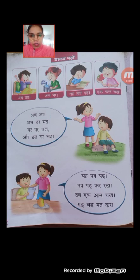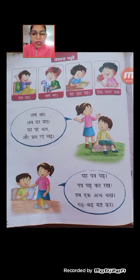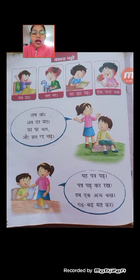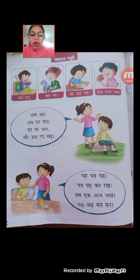आज हम पढ़ेंगे — वाक्य पढ़ो। दो अक्षरों वाले शब्द हमने पढ़ लिये हैं, अब उन्हें वाक्य में कैसे रीड करेंगे वो जानेंगे। जैसे पहला है — जो picture दे रखी है उसमें एक boy है, उसका नाम है जै। तो उसको हमें एक साथ मिलाकर कैसे पढ़ेंगे — जै उठ, जल भर, यह खत पढ़, एक फल चक्ख।